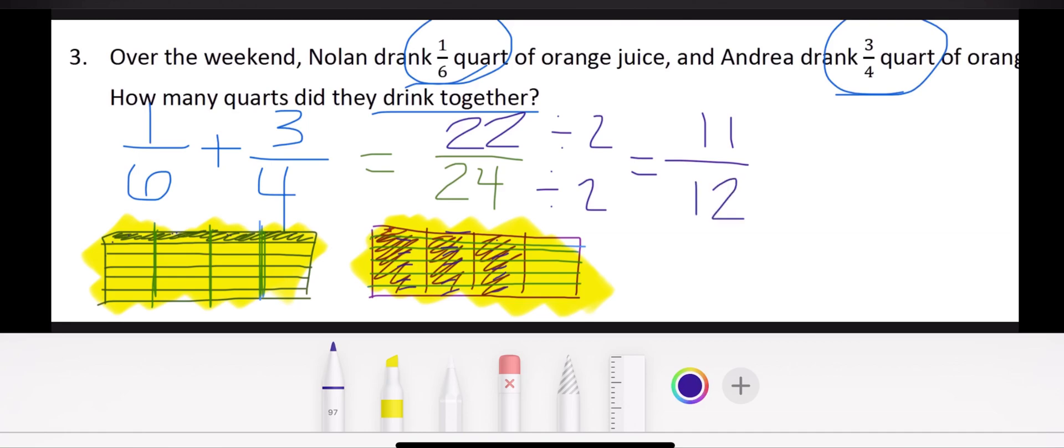And I knew that they could be divided by 2 right away because I saw that they were both even numbers. And when I simplified it, I got the answer of 11/12. And I know that I can't simplify anymore because 11 is a prime number, meaning that I can't divide it by anything else.